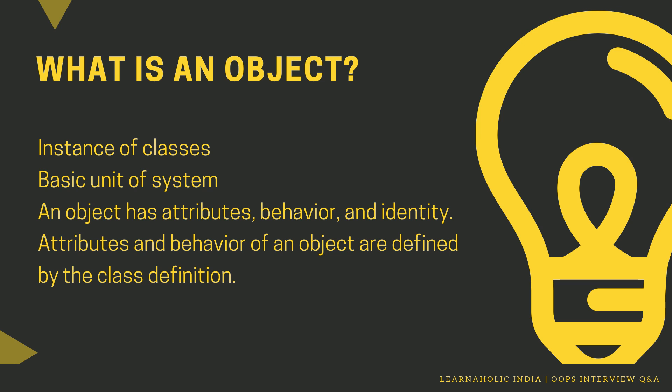From a programming point of view, an object can be a data structure, a variable, or a function. It has a memory location allocated. The object is designed as class hierarchies.